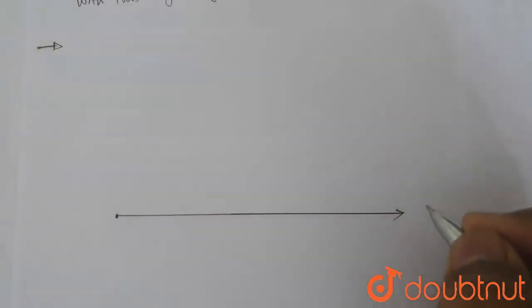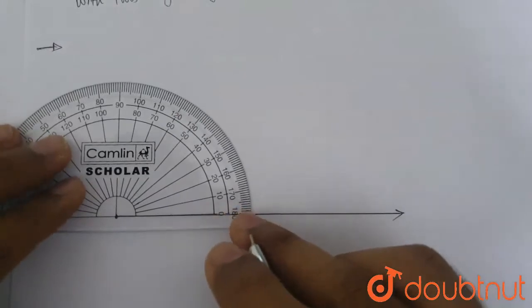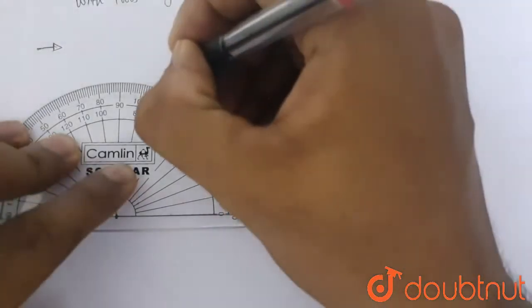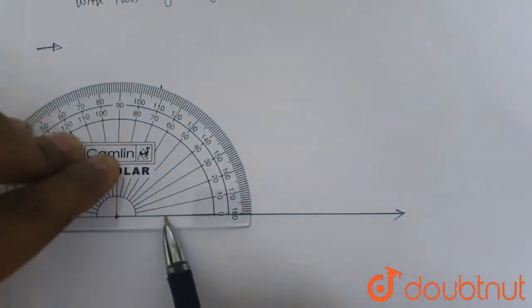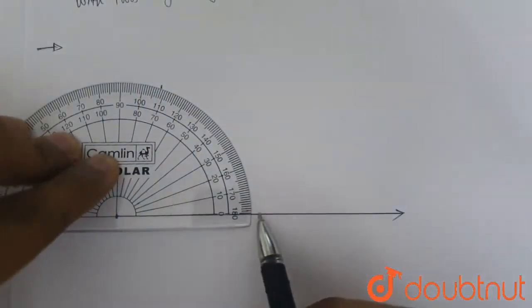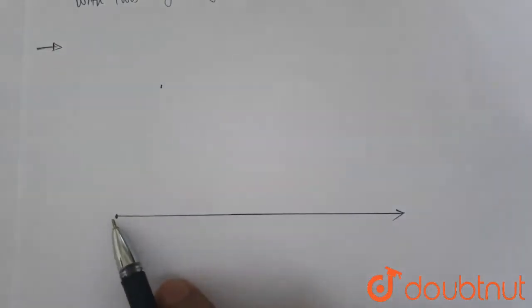And using a protractor we mark 72 degrees. Make sure that the line on the protractor and our line matches and the center point of the protractor matches with the point of the base.